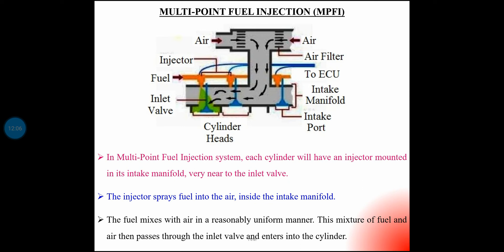Modern cars now use multi-point fuel injection. In the CRDI system, fuel is directly injected into the diesel engine cylinder. In the multipoint fuel injection system, fuel is injected into the intake manifold.